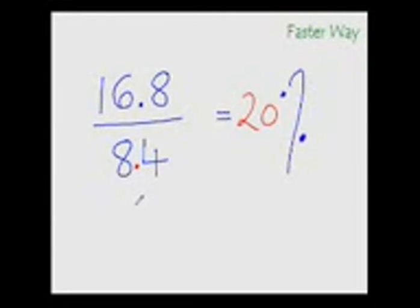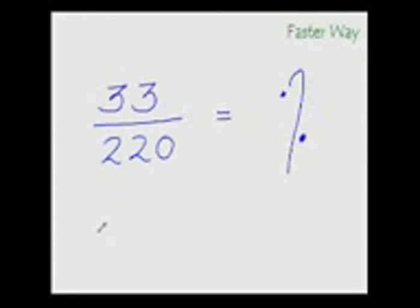Now you try to find out: 33 over 220 equals how many percent? So once again, look at the denominator and ask yourself: what percentage of this denominator is the numerator? So 10 percent, you know, would be 22, but this is more than that, so therefore we can say that our answer would be more than 10 percent.